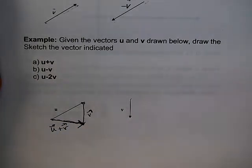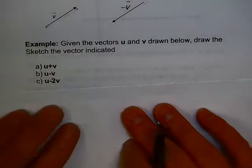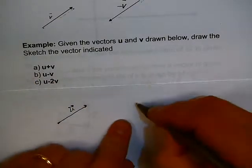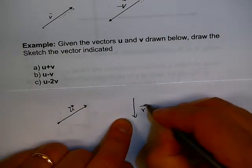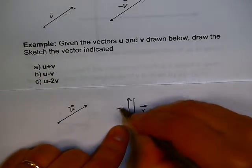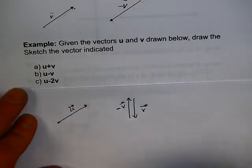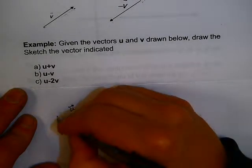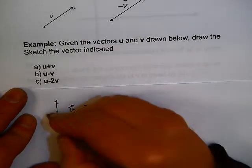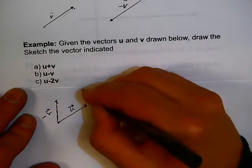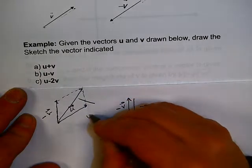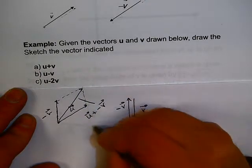If I wanted to do u minus v, I'll use the parallelogram method. I copy u and copy v. If that's v, then this is minus v — just change the direction. Using the parallelogram method, I take minus v and put it tail-to-tail with u, complete a parallelogram, and then the diagonal of the parallelogram is u plus negative v, or u minus v.